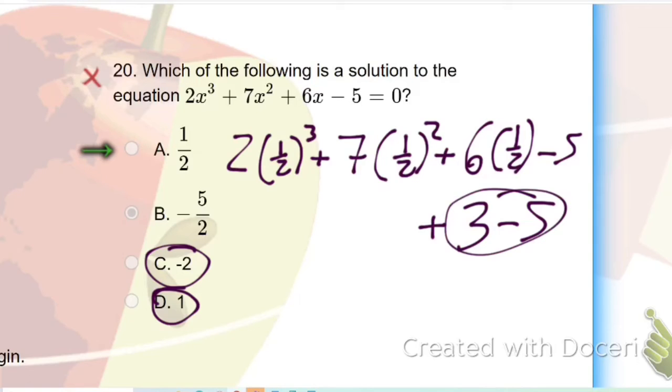And we can combine that right now from the jump. 3 minus 5, well that's negative 2.